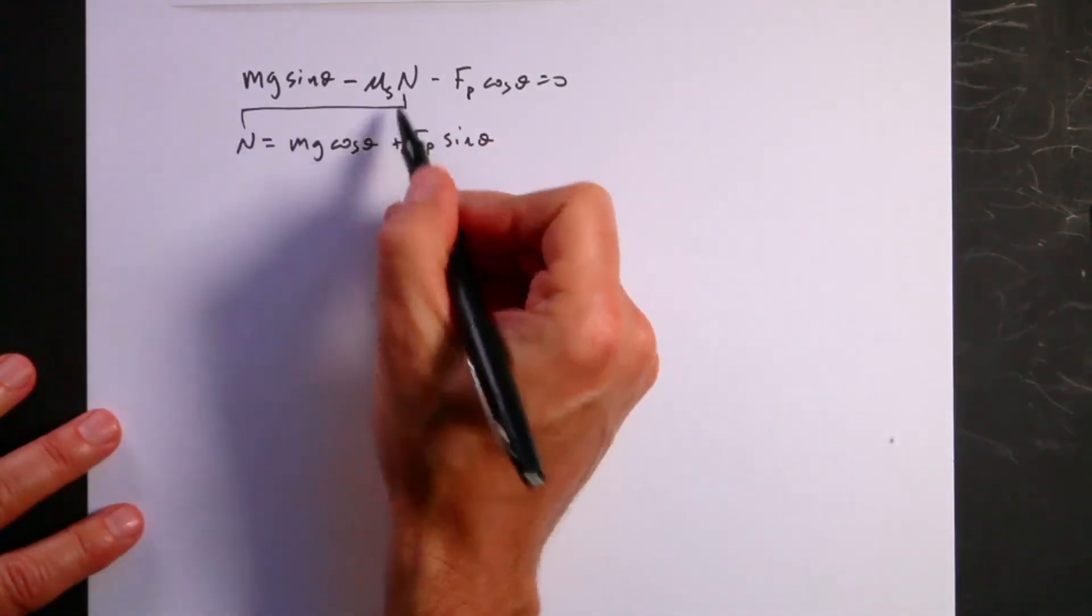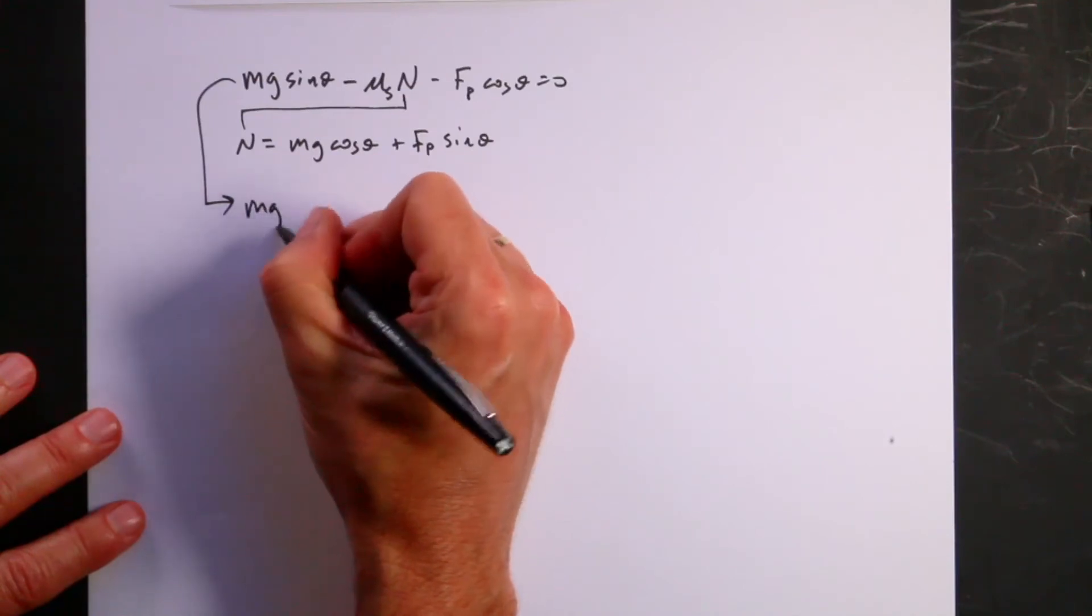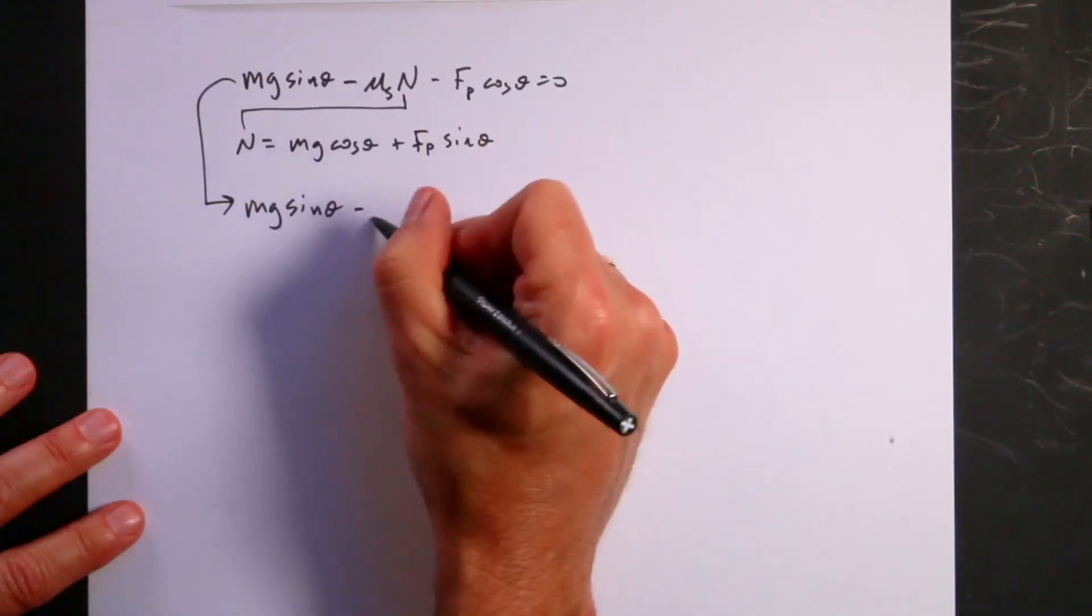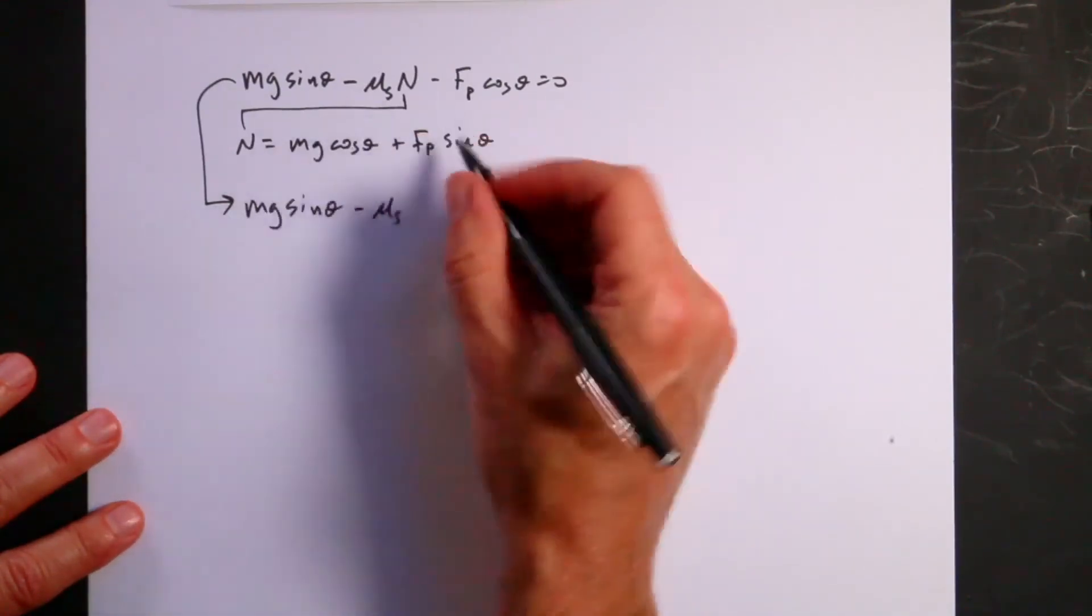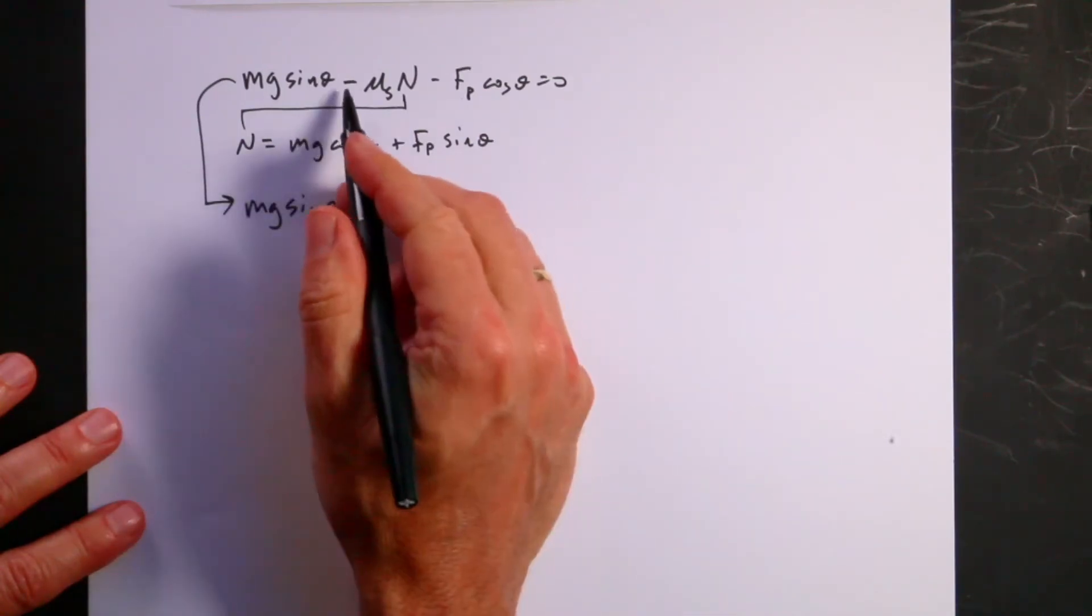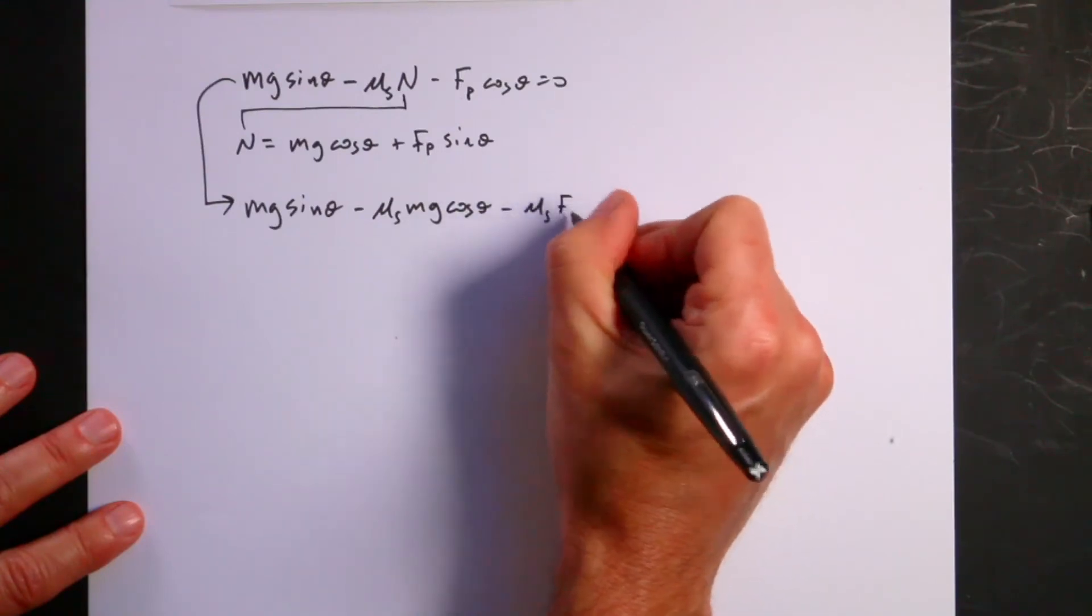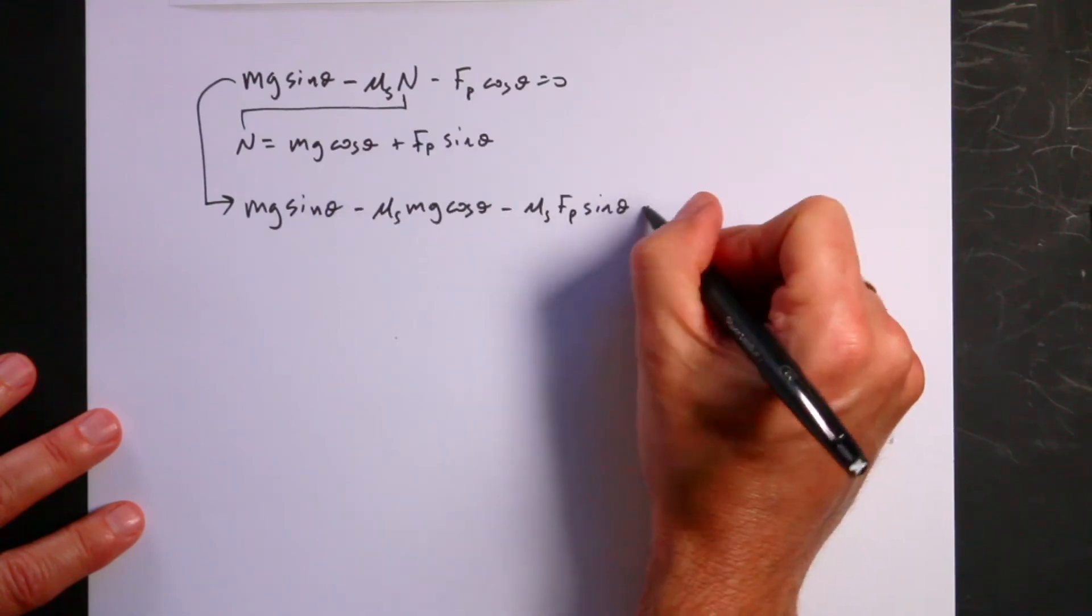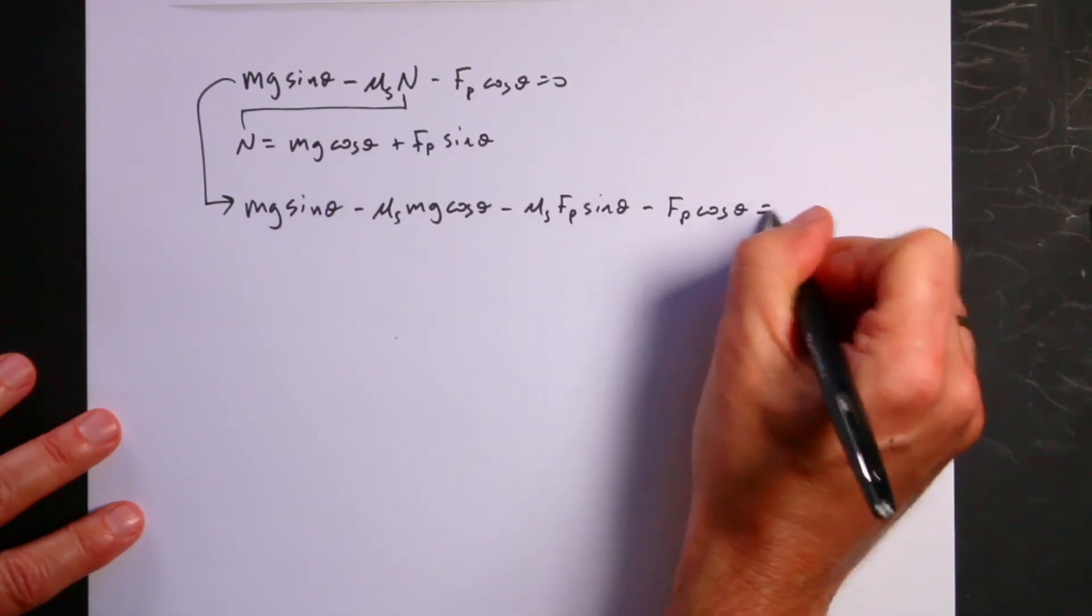Now I can substitute that in, and I get this equation becomes mg sine theta minus mu s times all of this. So I'm going to go ahead and multiply it out. So I have mu s times mg cosine theta, and there's still a minus sign, so I get minus mu s Fp sine theta. And then I have that term, minus Fp cosine theta equals zero.